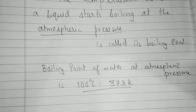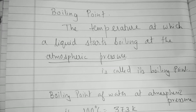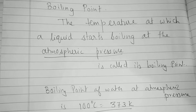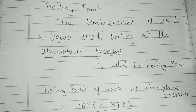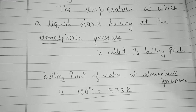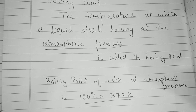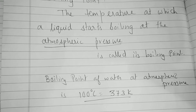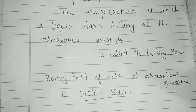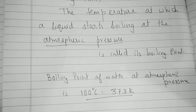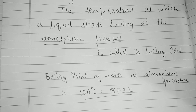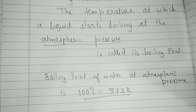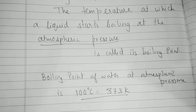If we don't mention atmospheric pressure, the definition is incomplete. Because the boiling point of water at atmospheric pressure is 100 degrees. If you increase the pressure, like to 2 atmospheric pressure, the boiling point of water would be approximately 120 degrees centigrade. So we have to mention the atmospheric pressure.